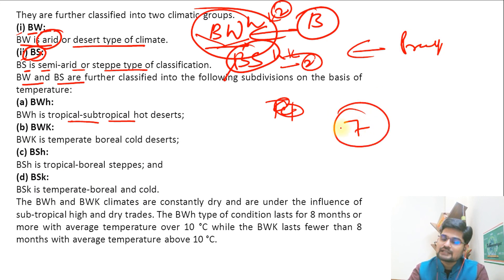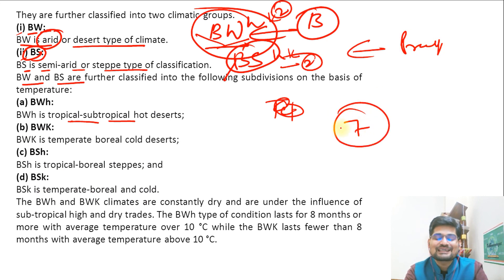So we have seven types in Trewartha's climatic classification. Now that we have discussed Trewartha's classification in detail, along with the previous two classifications — Köppen's and Thornthwaite's — in the sessions to come we will be talking more on applied climatology, urban heat islands, and global climatic changes. Stay tuned, stay safe, all the best.